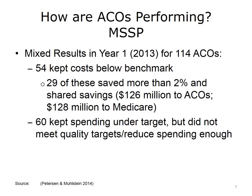We are just now beginning to see how ACOs are performing. A study published in 2014 looked at the largest ACO program, the Medicare Shared Savings Program, and found mixed results among 220 ACOs. About half of the ACOs met quality benchmarks and kept spending below targets. Twenty-nine of these ACOs saved more than 2% and were eligible for sharing savings. The ACOs received $126 million in savings and generated $128 million in total savings for Medicare. Slightly more ACOs, 60, did not meet their quality benchmarks or did not reduce spending enough to share in savings.